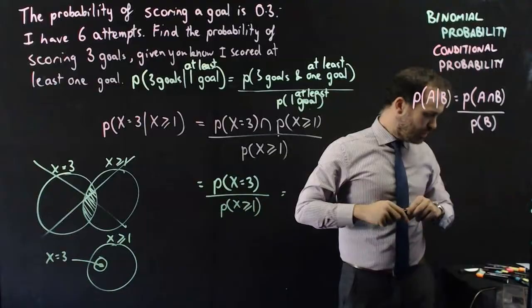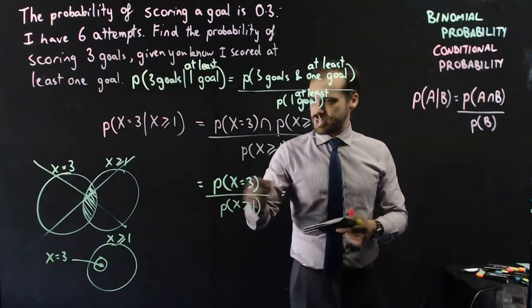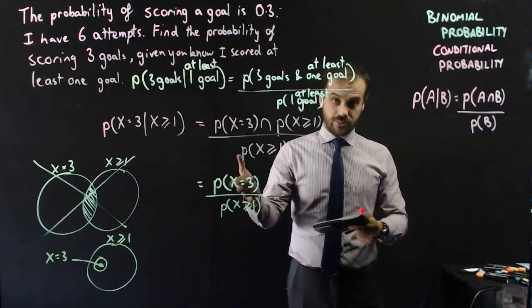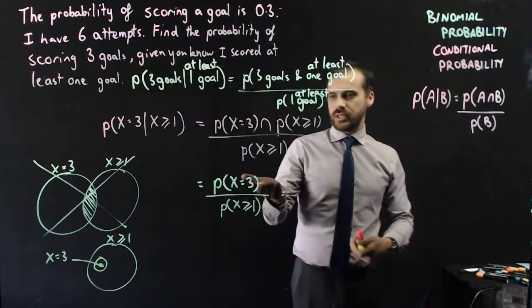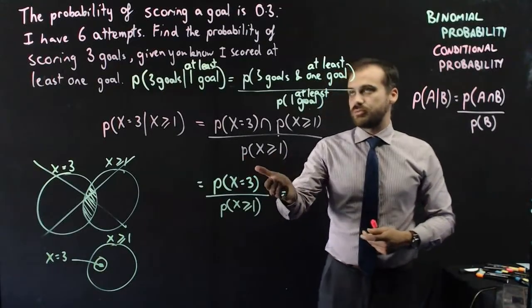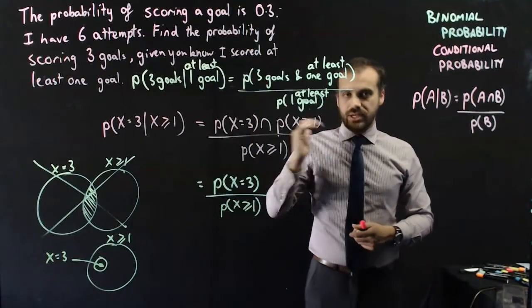Okay, I am going to use my calculator to solve this binomial probability, because that's a binomial probability, and this is a binomial probability. Now, this is a binomial probability with six trials, probability of success of 0.3, and three successes.